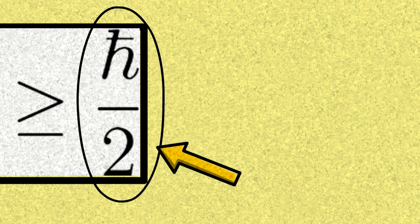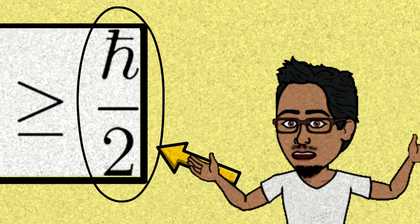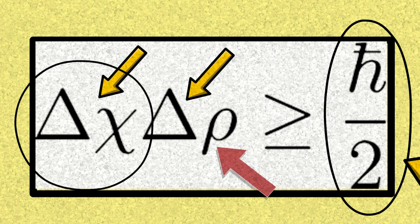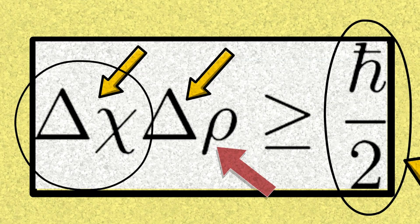The key idea here is that this number is not zero — it is actually more than zero. So if you increase the uncertainty in position, the momentum uncertainty has to change to maintain this relationship, because the product is greater than or equal to a very specific constant that cannot change. If you increase one variable, the other decreases. The more certain you are about the position of an object, the less certain you are about its momentum, and vice versa.